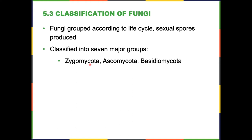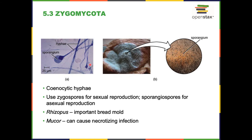Fungi are grouped according to their life cycle and sexual spores — there are seven major groups, but we'll cover three. The Zygomycota produce coenocytic hyphae and use zygospores for sexual reproduction and sporangiospores for asexual reproduction. They're characterized by long sporangia that extend up off the surface with spores in a sac. Rhizopus — what we call bread mold — is an example: the white fluffy thing on your bread, which grows up with little black sporangia on top, each containing hundreds of spores that then pop and burst. Mucor is a very important zygomycota that causes necrotizing infection — rapid tissue death — in systemic infection.